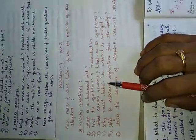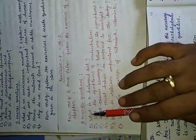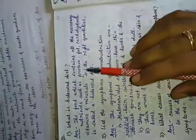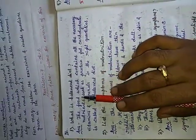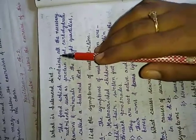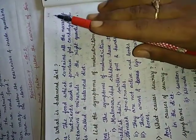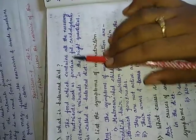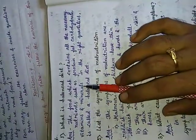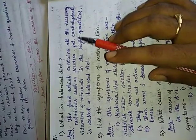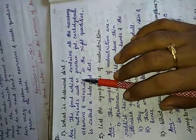The first question is: what is a balanced diet? Open the classwork copy — all the answers are written there. A balanced diet means food which contains all the necessary nutrients — protein, fat, carbohydrate, vitamins, and minerals — all present in the right quantities. This food is called a balanced diet.